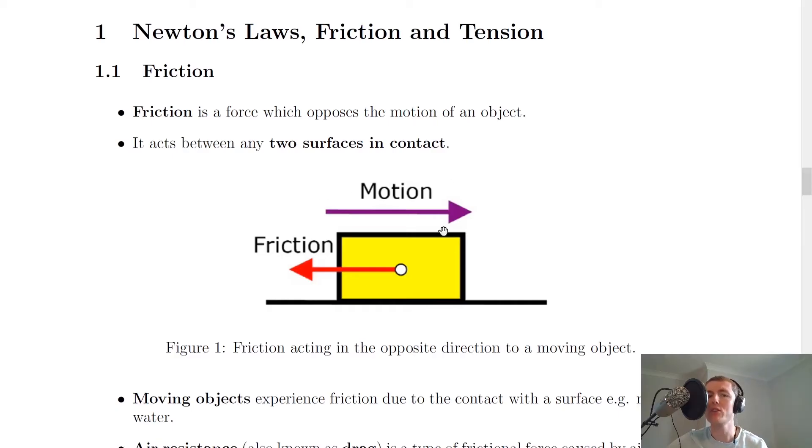So if we look at this picture, imagine you've got a block sitting on a tabletop and the block is moving this way, then it's going to have friction acting in the opposite direction against it. And that frictional force is arising because the two objects, the tabletop and the block, are in contact with each other. And it's actually at the molecular level, at the point of contact, at which the frictional force will occur.